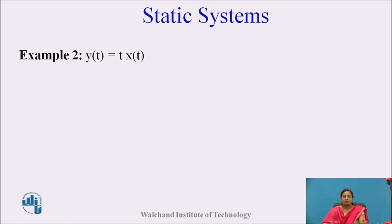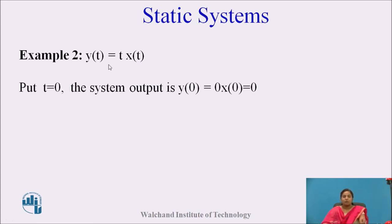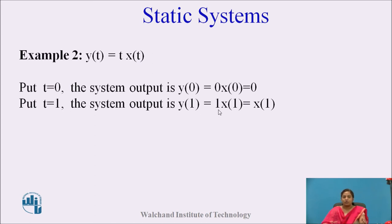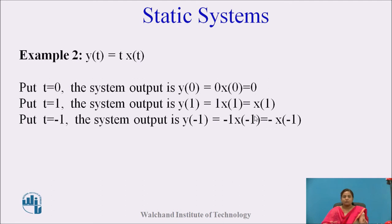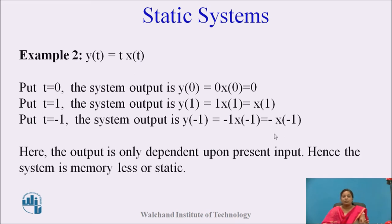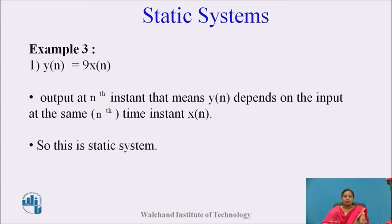Another example of a static system: y(t) = t·x(t). Putting t = 0 gives y(0) = 0·x(0) = 0, and putting t = 1 gives y(1) = 1·x(1) = x(1). The output only depends on the present input, so the system is memoryless or static. A third example is the discrete case: y[n] = 9x[n]. Here the output at the nth instant depends only on the input at the nth instant — this is also a static system, specifically a discrete static system.